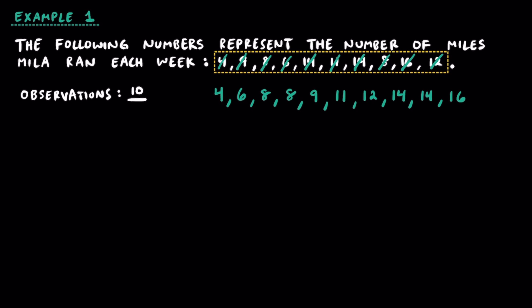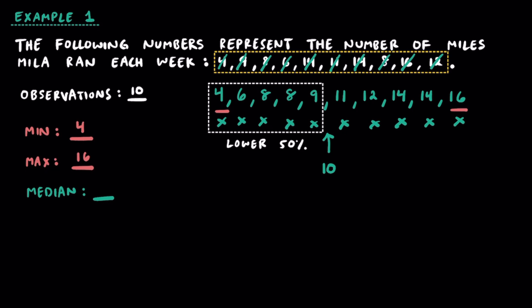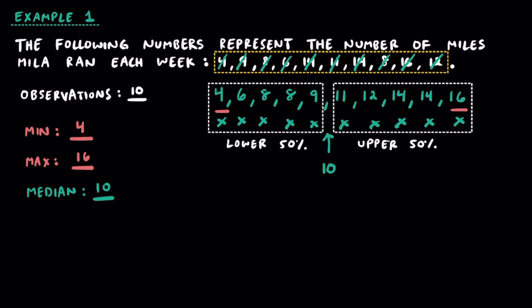The minimum number of miles she ran one week was 4 miles, and the maximum was 16. Looking for the median, we can cross off numbers from both sides until we get to the middle, which is between 9 and 11. Seeing how the median number of miles is going to be 10, this separates the data into the lower 50% on the left and the upper 50% on the right. 10 miles represents the median of the dataset, or quartile 2.